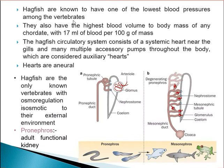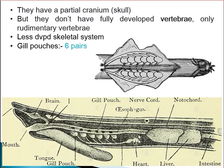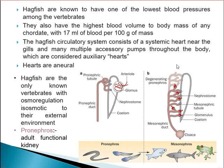Hagfishes are known to have one of the lowest blood pressures among all vertebrates, yet they have the highest blood volume compared to body mass — around 17 ml of blood per 100 grams of body mass. The circulatory system consists of a systemic heart located near the gills. Apart from this heart, they also possess multiple accessory pumps throughout the body considered as auxiliary or accessory hearts. The hearts are aneurial, meaning the pumping rhythm is not under nervous control.